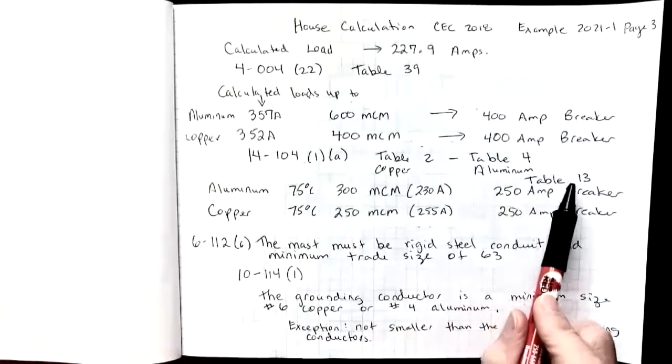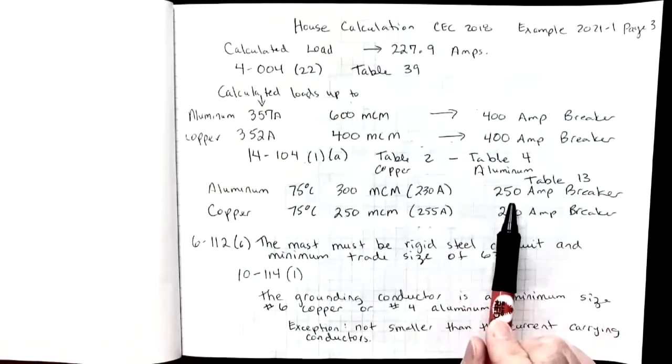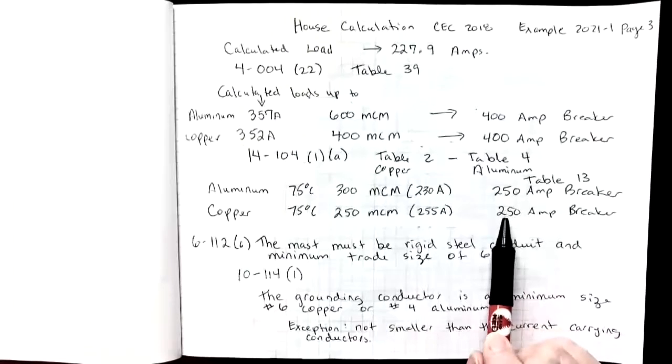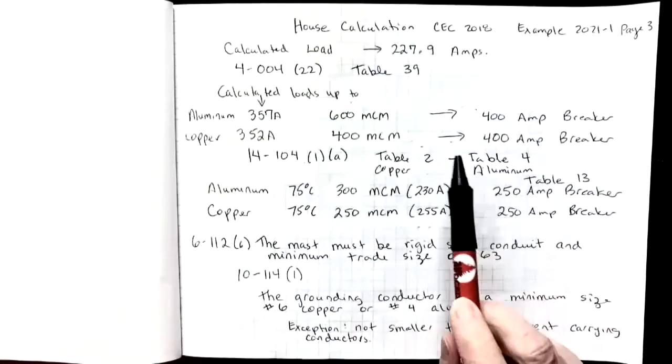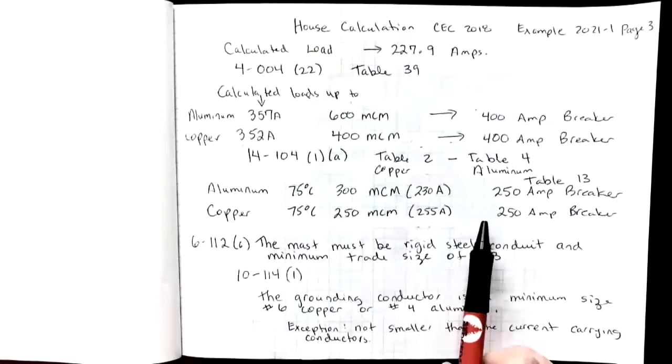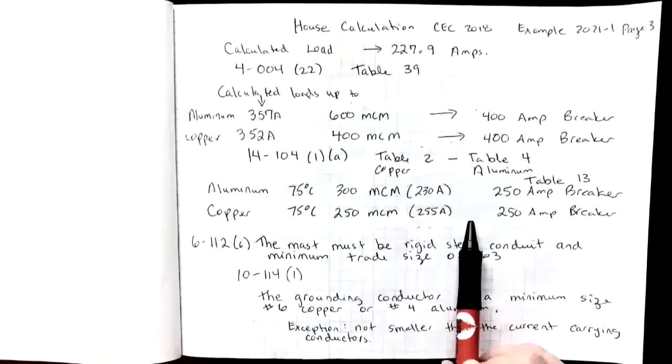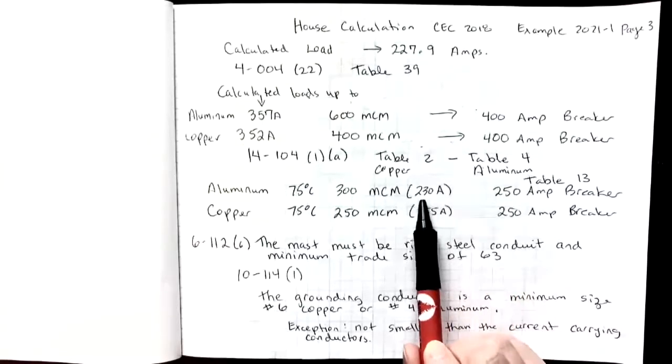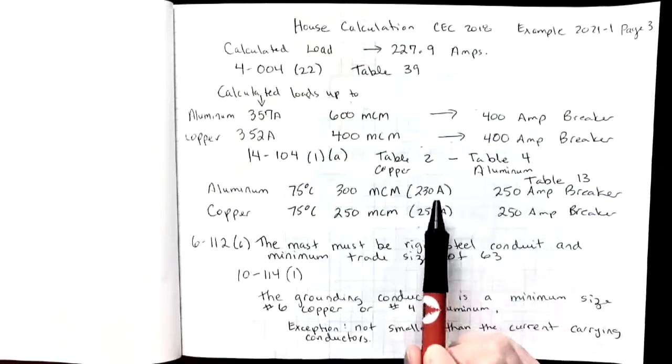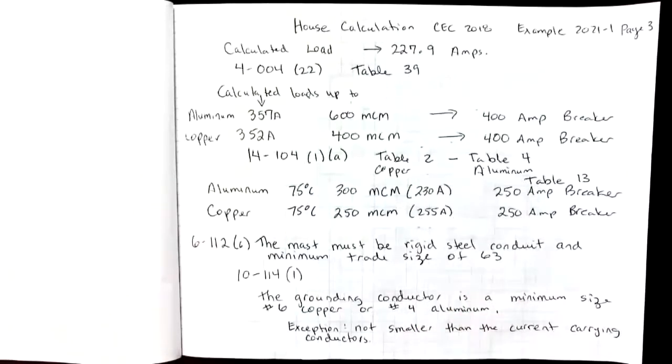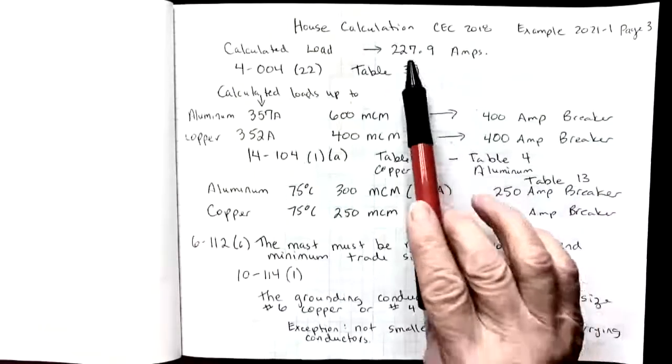Then what I do is I go to table 13, and I see what size breaker I can use on these wire ampacities. And in either case, I'm allowed to use a 250 amp breaker. When I compare what table 39 had to offer to what tables 2, 4, and 13 have to offer, it would be a less expensive installation if I could use a 250 amp breaker and use either copper or aluminum, and it would be a lot cheaper than going with a 400 amp service. And that would be perfectly fine. Still covers my calculated load.